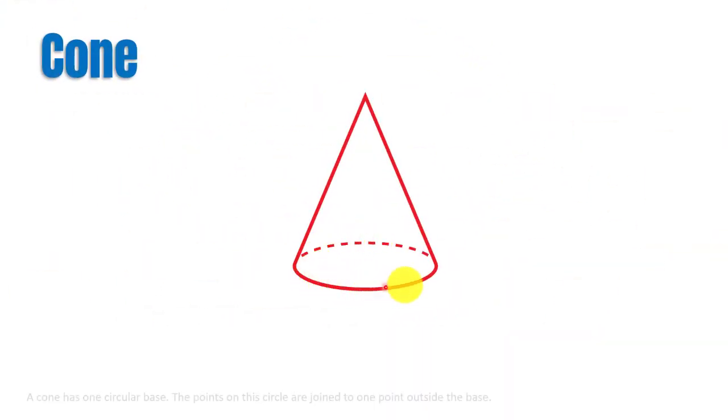A cone has points on a circle that are joined to one point outside the base called the vertex of the cone. Hence, it is also not a polyhedron.